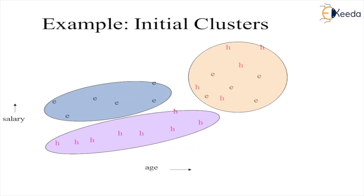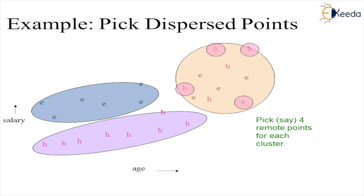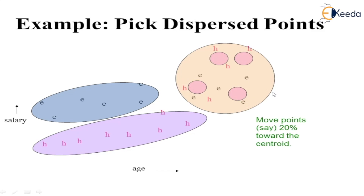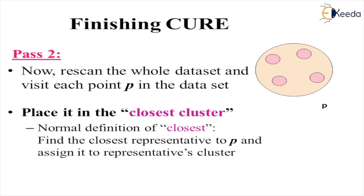Let's understand by a second illustration. We have some points processed using some algorithm, and three clusters are formed — two are elliptical and one is circular. On the x-axis we plotted age and on the y-axis we plotted salary. In the second pass, we select the representative points — focusing on the circular one, four points are selected as representative points. We then take them 20% towards the centroid. After that, we scan the whole data set and revisit each and every point to determine whether they are possibly in the same cluster or not.